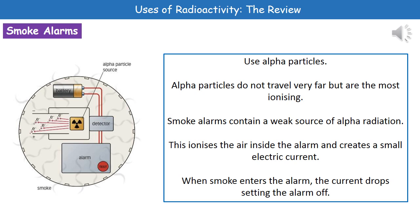Welcome to our review on uses of radioactivity. We're going to look at what we can actually use ionizing radiations for in terms of beneficial uses to us. The first one is looking at a smoke alarm. Smoke alarms actually use a source of alpha radiation. Because alpha particles are not very penetrating but are very ionizing, this means they're very well suited to smoke alarms.